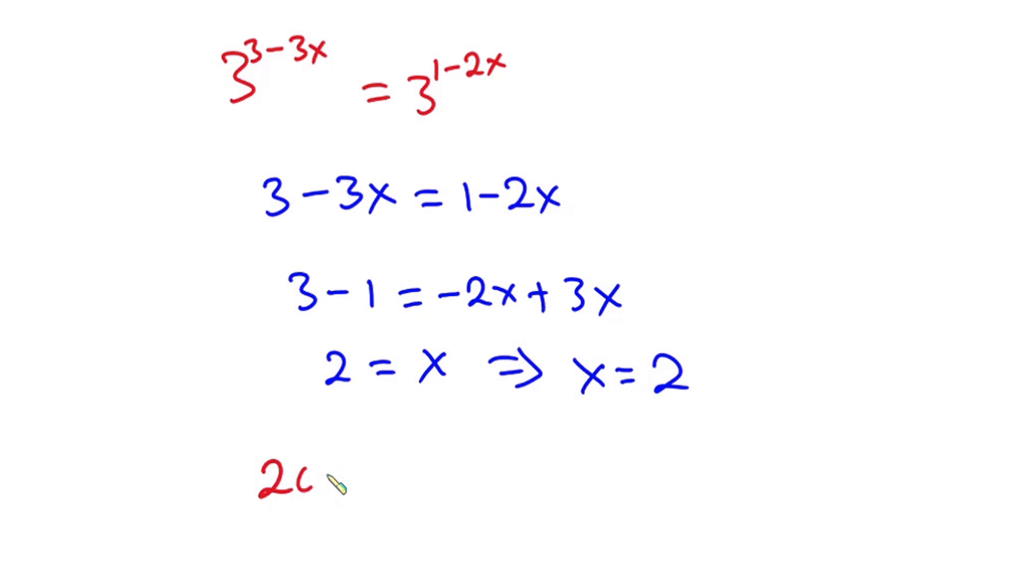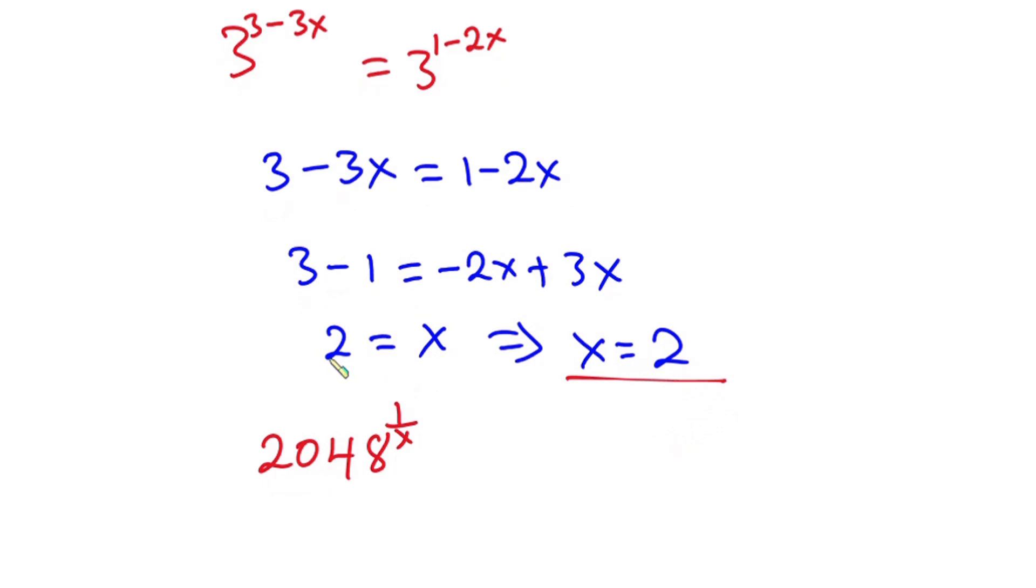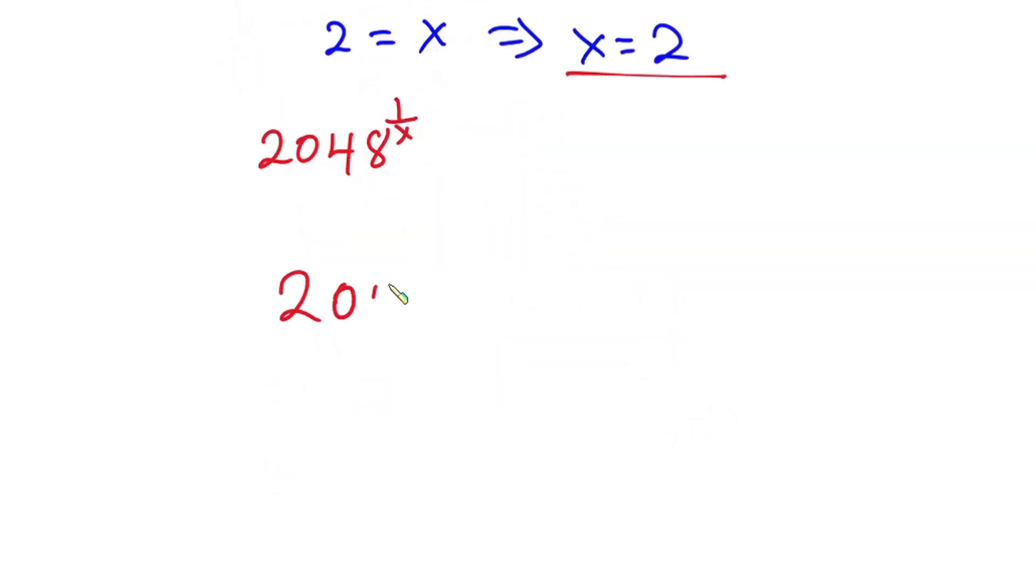And from the problem we have to find 2048 to the power 1 over x. Now we know x to be 2, so we have 2048 to the power 1 over 2, and this is also the same as the square root of 2048.